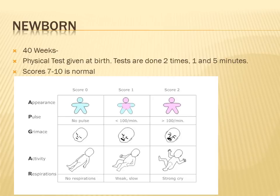The APGAR test evaluates five criteria: Appearance (normal skin color/circulation), Pulse, Grimace (facial reflexes such as crying), Activity (arm and body movement), and Respiration (strength of breathing or crying). The first score is often slightly lower since the baby is just beginning to breathe on its own. That first minute — when the baby cries for the first time — is considered remarkable.